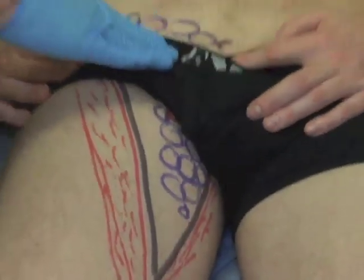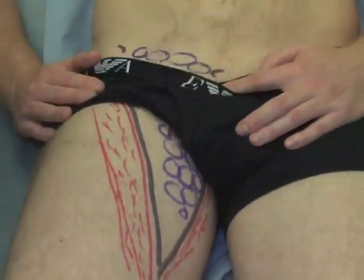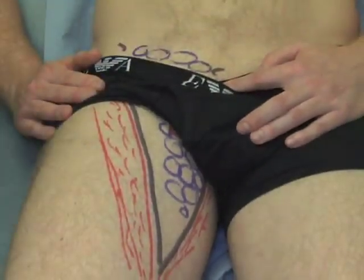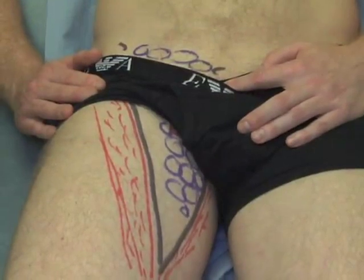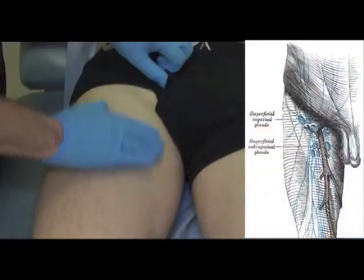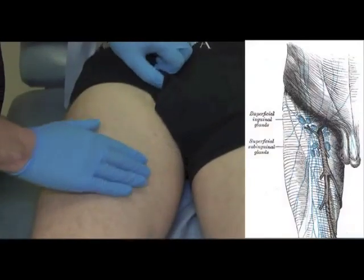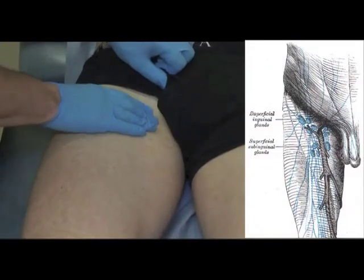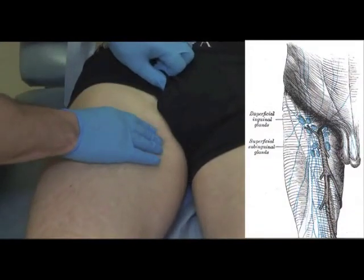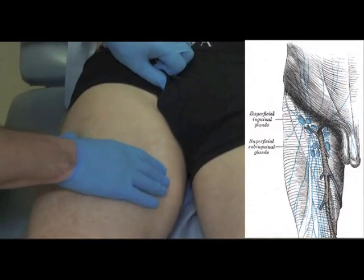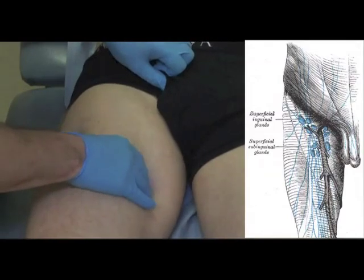The majority of the horizontal group is situated underneath this subject's undergarments. The vertical and horizontal groups are examined in a systematic fashion with the fingers flat. Small circular motions are made while pressing firmly.